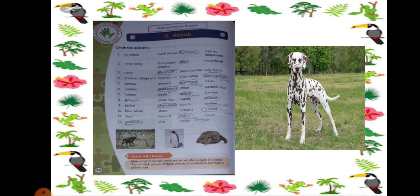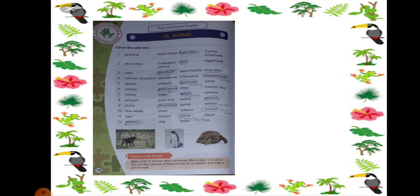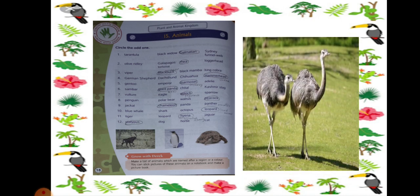Number 2, which is the odd one: Olive Ridley, Galapagos Tortoise, Rhea and Loggerhead. Rhea is the odd one out because you can see this is Rhea. This is a bird, and the others are all kinds of turtles. So Rhea is a bird. So this is the odd one out.